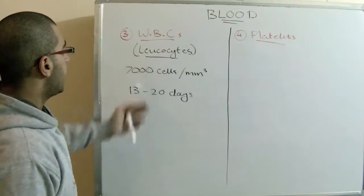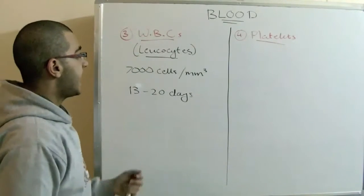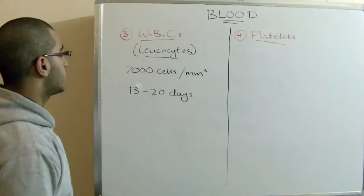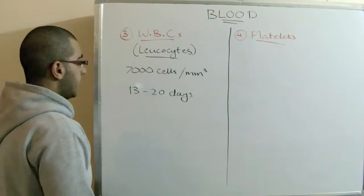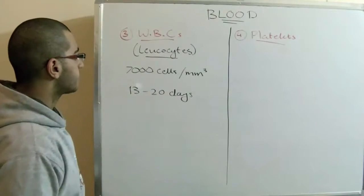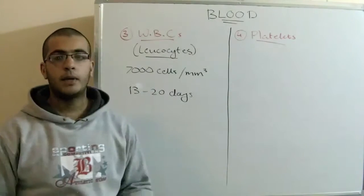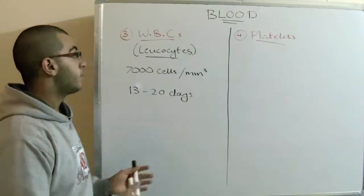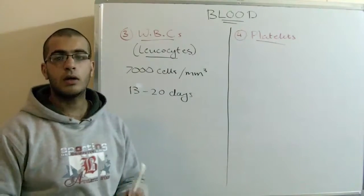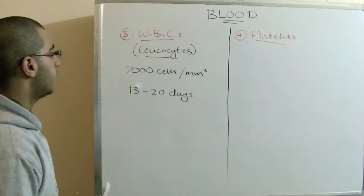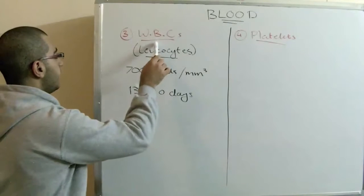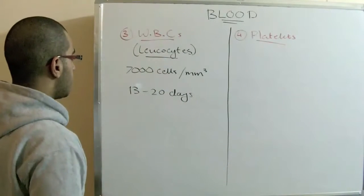The leukocytes have a lot of types and each type has a definite function. They are colorless and nucleated, and they are the opposite of the red blood cells, which are red in color and enucleated — they don't have a nucleus — while the white blood cells contain a nucleus.